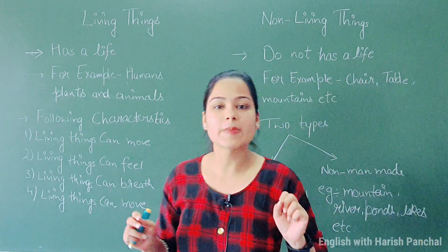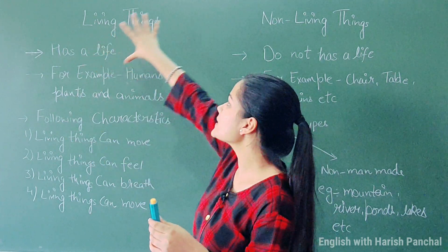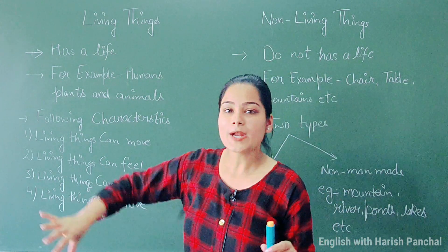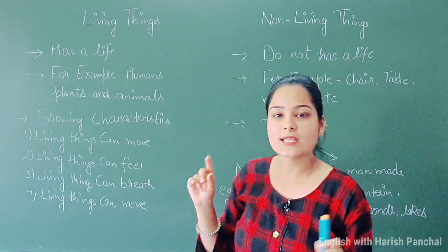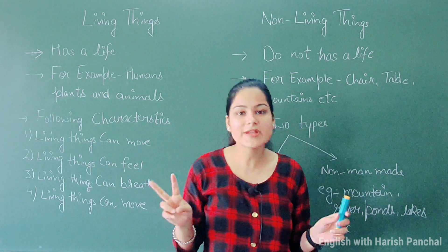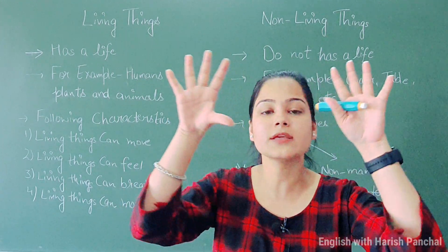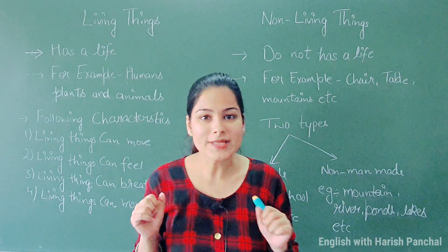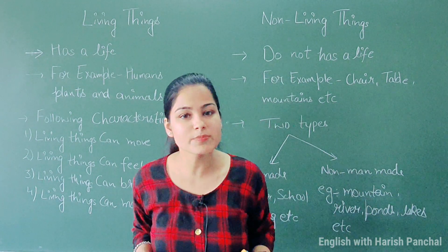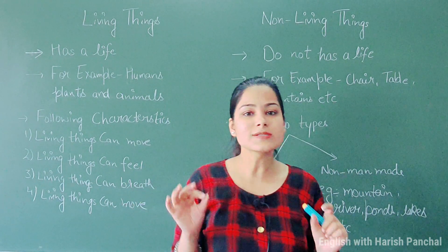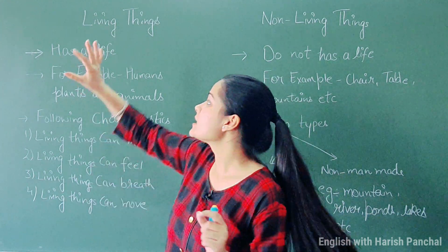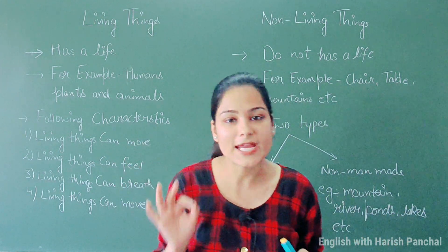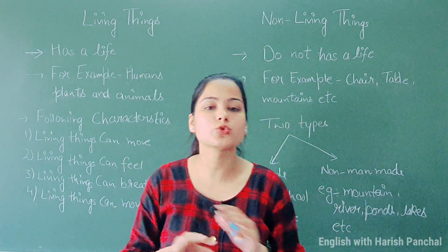We have two categories. Living and non-living things together come under an ecosystem. If someone asks you what an ecosystem is, you can answer that an ecosystem is composed of both living and non-living things — living things which have a life, and non-living things which do not have a life.